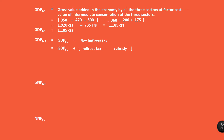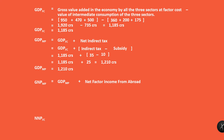So GDP at market price equals 1,185 plus 35 minus 10 equals 1,210 crores. To calculate gross national product at market price, we add net factor income from abroad: 1,210 plus 4 equals 1,214 crores. This is one of our answers.